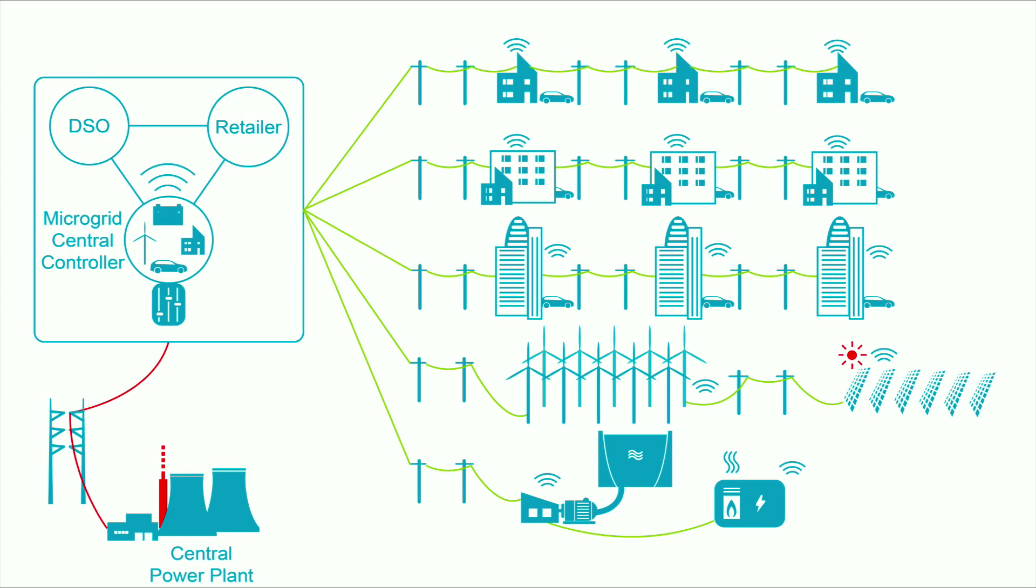As we have seen, the main goal of active control is to turn microgrids into flexible, efficient, robust, reliable and economic power networks.